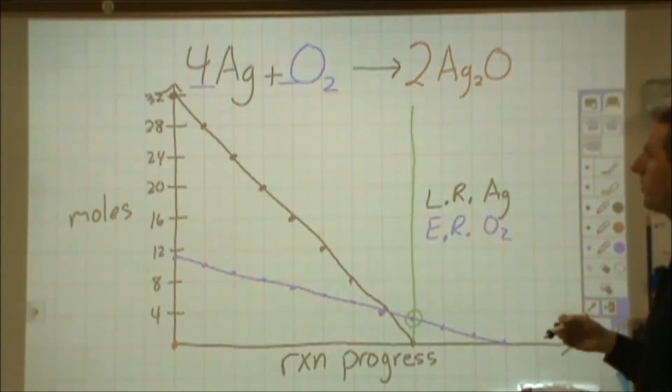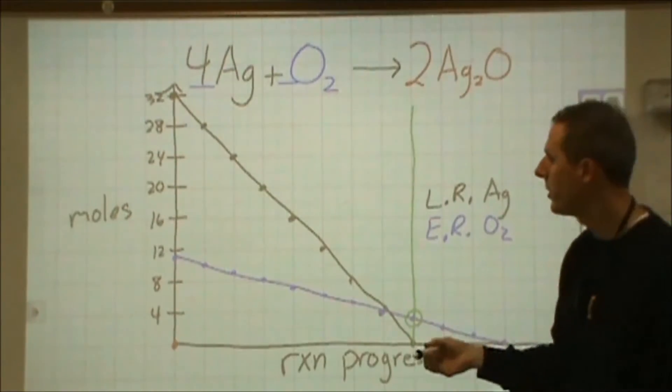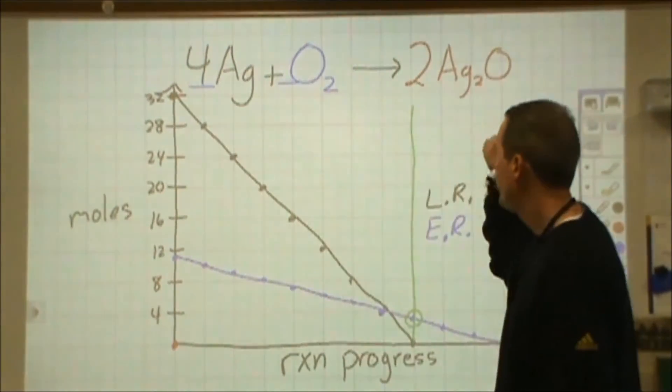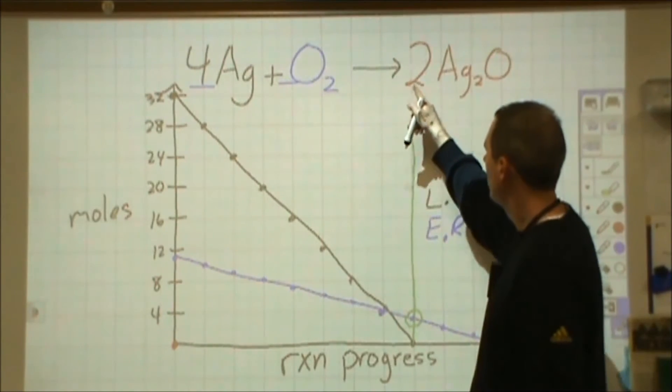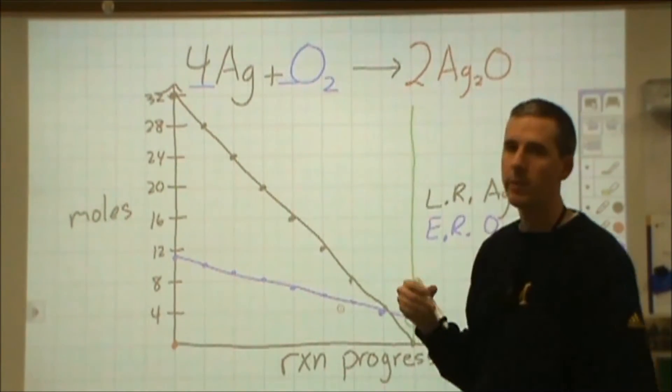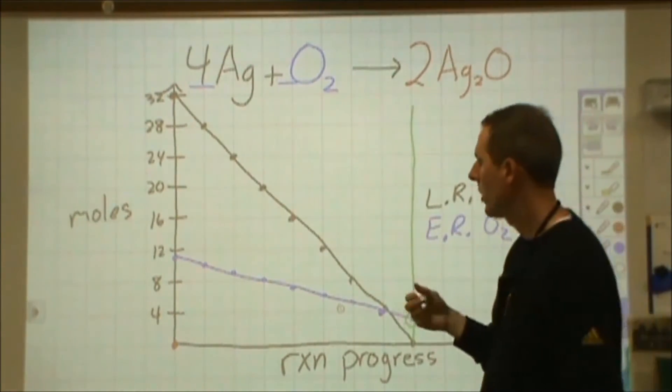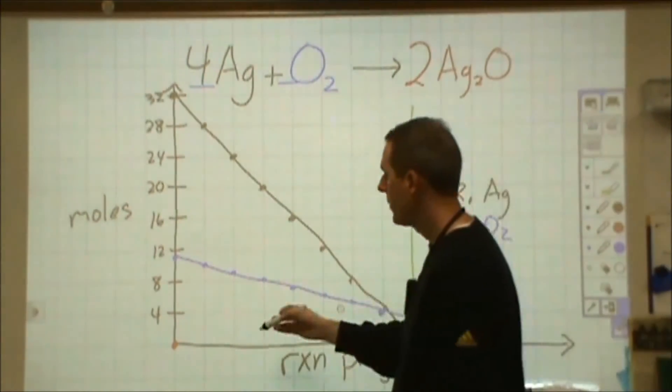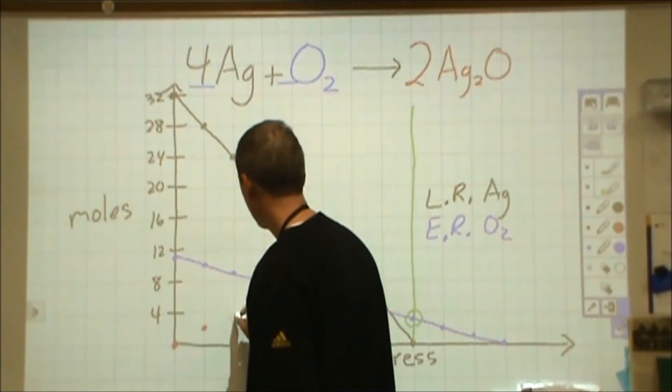Now when we look at the silver oxide being formed, we have two options. So we're starting with zero. So as we move over one, we're either going up half as fast as the silver went down, or if we're going up twice as fast as the oxygen went down. Either way, every time we move over a square, we're going to be going up two.